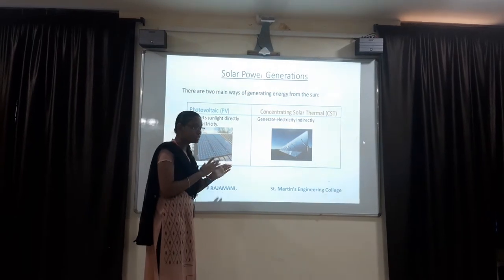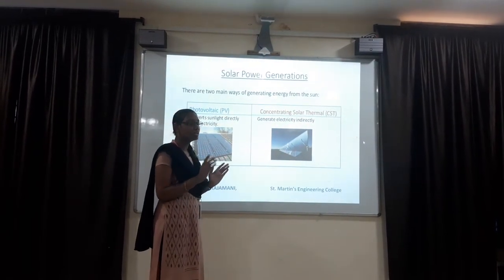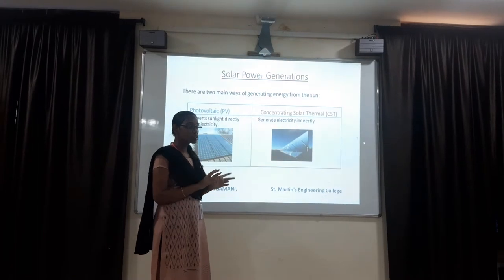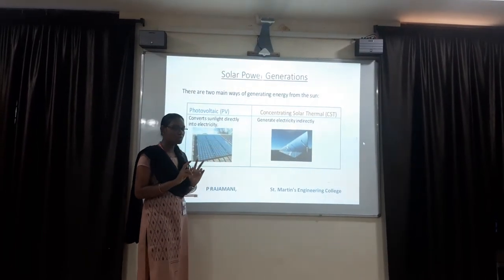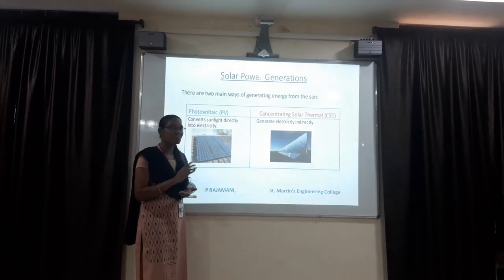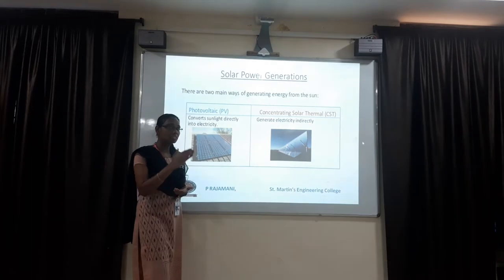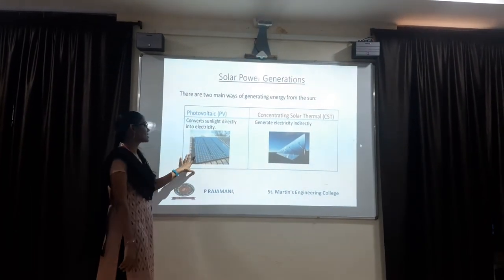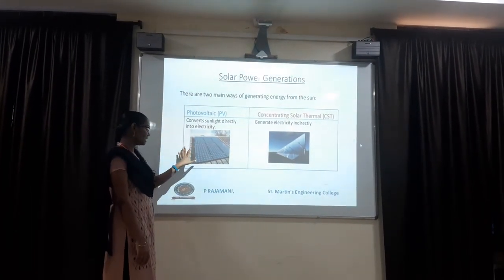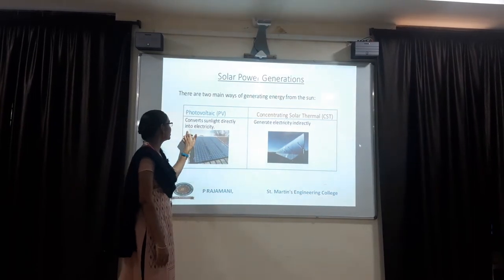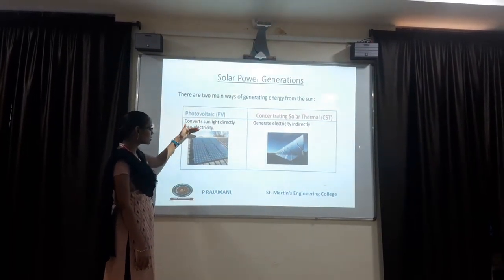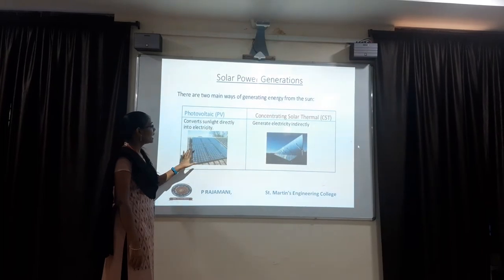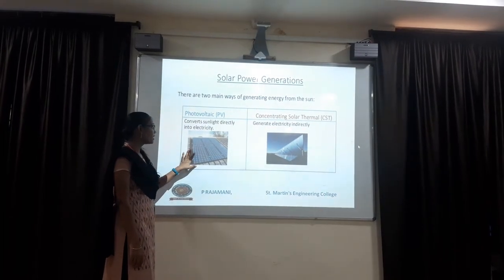Indirectly means from sun to the absorber body, we have some components or intermediate elements between them. In the photovoltaic system, it converts sunlight directly into electricity. The total sunlight is directly converted into electricity.